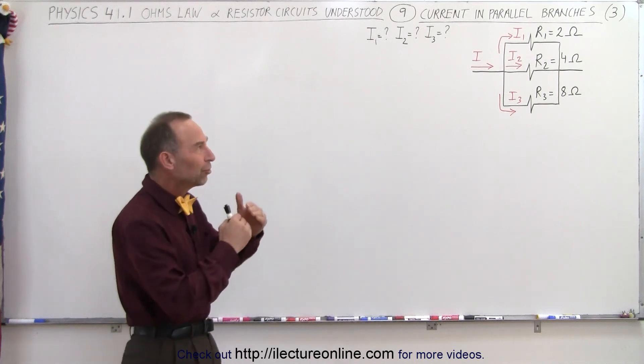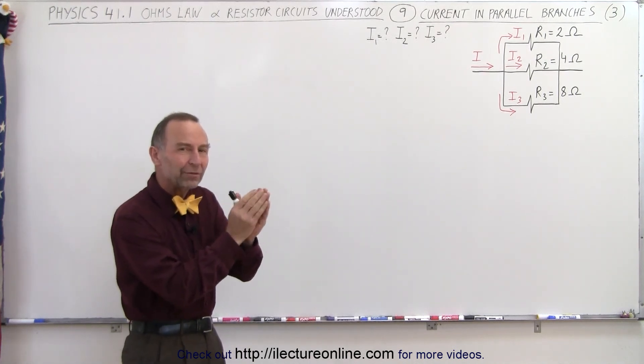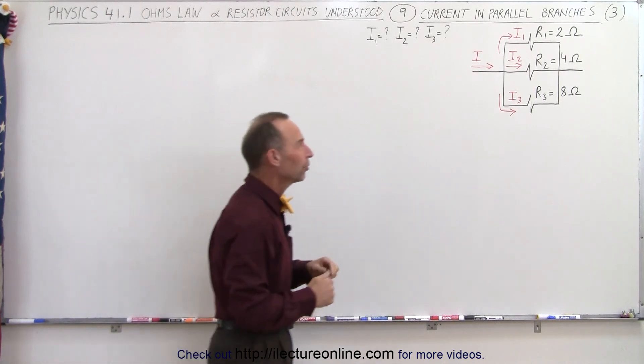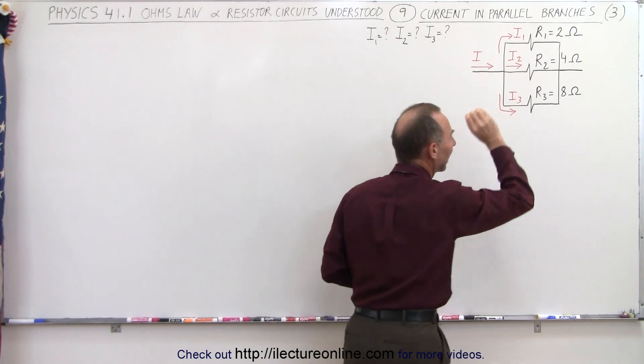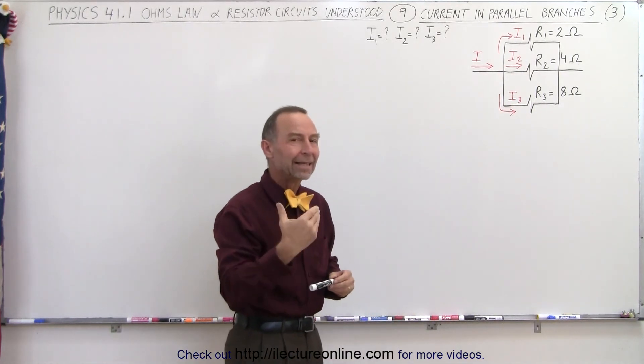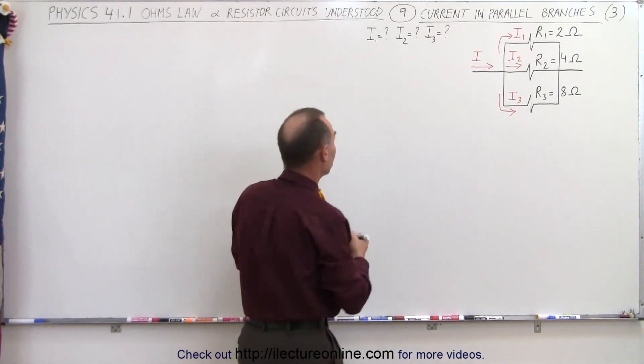We can get that done by assuming that the first two branches are like one parallel branch relative to the third one. In other words, we're going to combine these two, R1 and R2, into one equivalent resistor and then make that act as if it was the other branch.